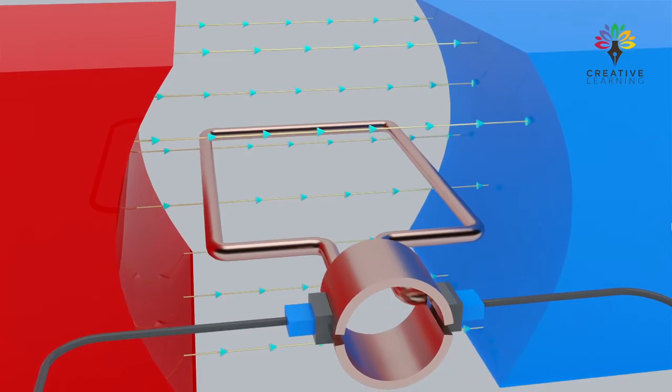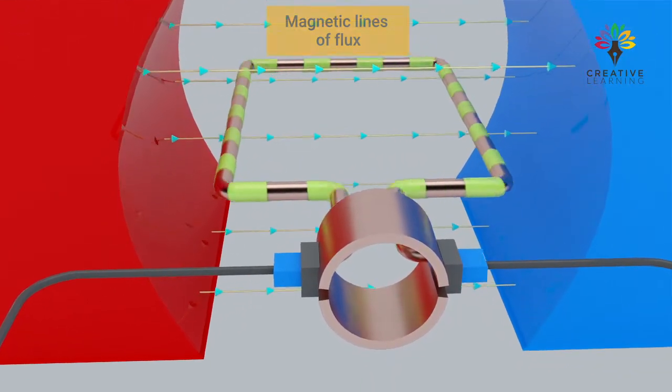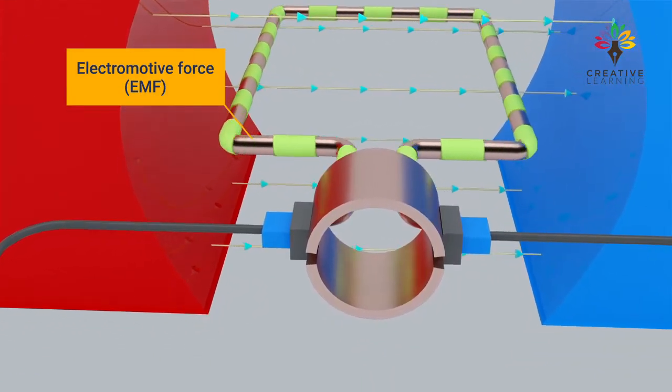As the armature spins, it cuts through the magnetic lines of flux, inducing an electromotive force, EMF, in the coil.